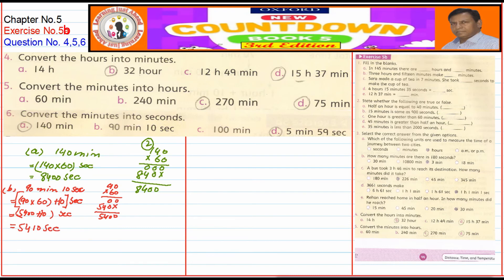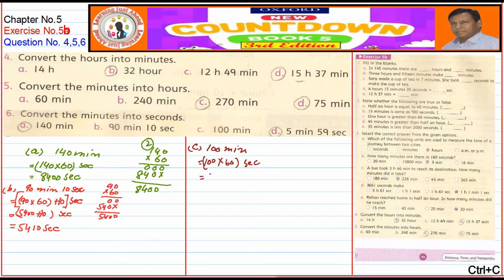Part C: 100 minutes. We multiply 100 by 60, which gives 6000 seconds.